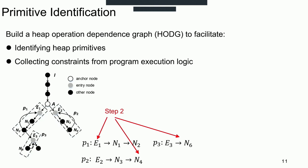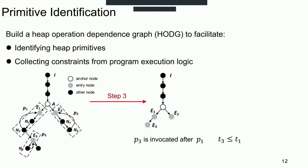After that, we collect the constraints from the execution logic. We extract the happen-before relationship among the primitives by locating the entry nodes in the dominant tree. For example, in the figure, the primitive 3 relies on the primitive 1.